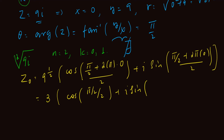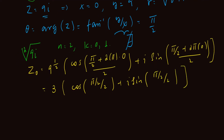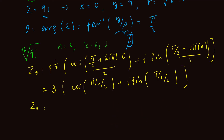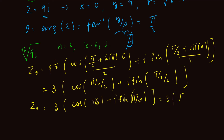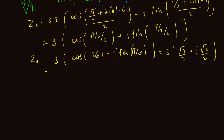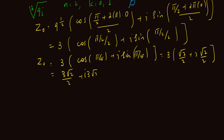So z_0 simplifies: pi over 2 divided by 2 gives pi over 4. The first root is 3 times cosine of pi over 4 plus i times sine of pi over 4. Since cosine and sine of pi over 4 are both square root of 2 over 2, we get 3 times square root of 2 over 2 plus 3i times square root of 2 over 2.